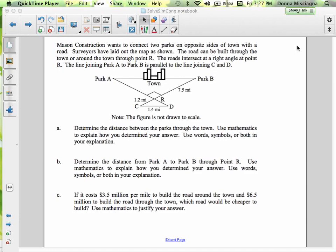Welcome to the conclusion of solving using similar triangles in your pod. So Mesa Construction wants to connect two parks on opposite sides of a town with a road. So we have two parks there, Park A and Park B.